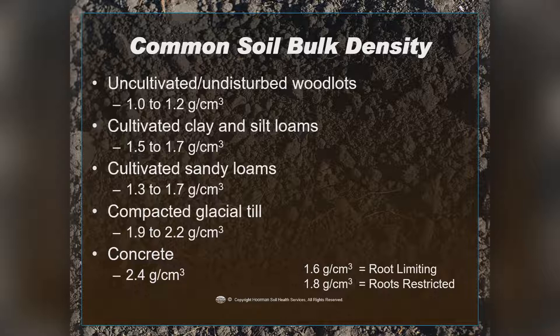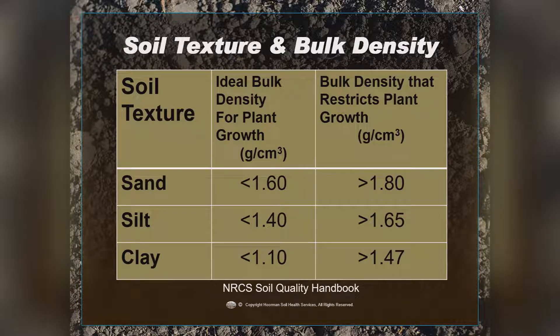For sand, below 1.6 you'll have good root growth, but above 1.6 it becomes limiting, and greater than 1.8 we get J roots — where roots go down to that layer and turn off at a right angle. For clay, the ideal is somewhere less than 1.1 grams per centimeter cubed, and once we get above 1.47, roots are severely limited and can't penetrate that soil.